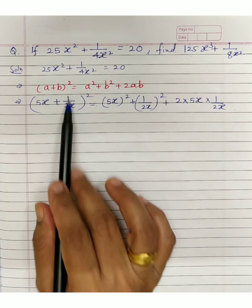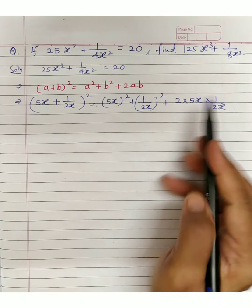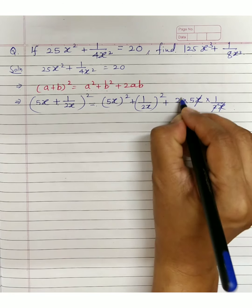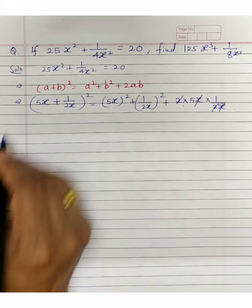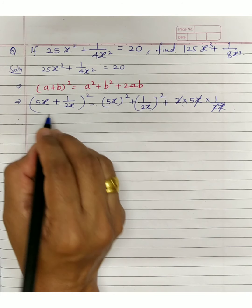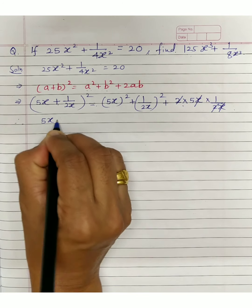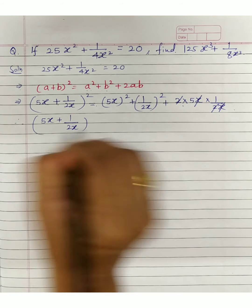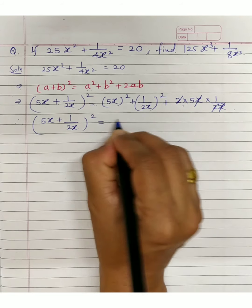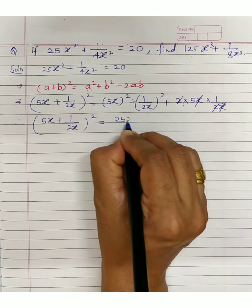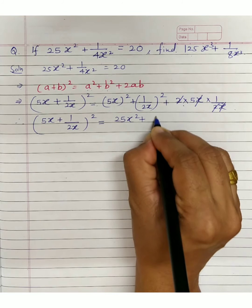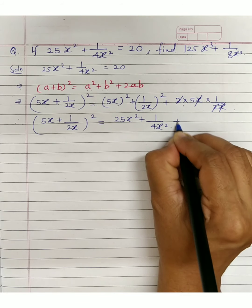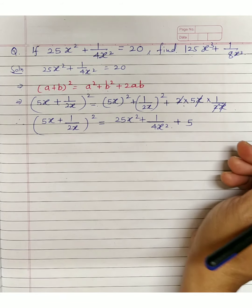This is where 5x + 1/(2x) comes from. So (5x + 1/(2x))² equals 25x² + 1/(4x²) + 5.